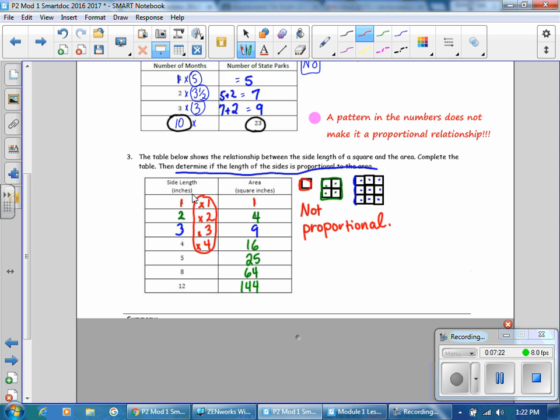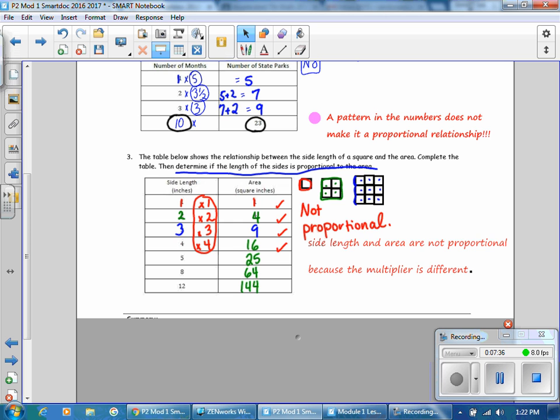This is a nice pattern of one squared, two squared, three squared, four squared, etc. But remember that a pattern in the numbers does not make it proportional. The side length and the area are not proportional because the multiplier is different.